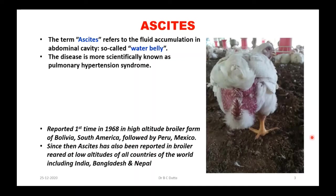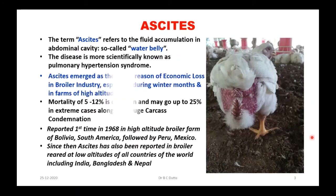Later it spread to even lower altitude areas all over the world, including Nepal, Bangladesh, and India. Ascites emerged as a major reason for economic loss in the broiler industry, especially during winter months and in high altitude areas. Ascites is more prevalent in Nepal because of the altitude, the ceiling, the winter, plus the high altitude. Ascites is more in Nepal than India.